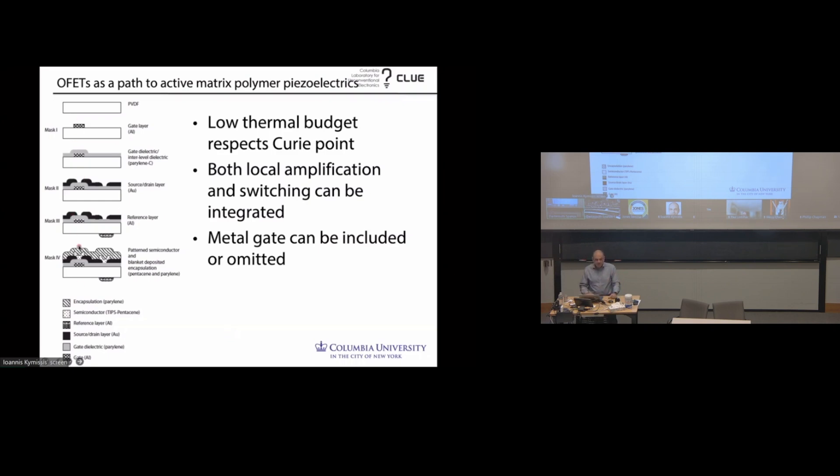So the solution that we've been working on for some time is to put active electronics directly onto the PVDF. The first thing I mentioned before is that the thermal budget that we have is quite limited. So we need to use transistors which we can process at low temperatures. Organic field effect transistors meet that requirement. So that low thermal budget respects the Curie point. The second part is, we can talk about this more in the Q&A if people have questions, but we can make two different kinds of transistors. The transistor on the left is kind of a boring, normal, thin film transistor. And it might look upside down, because it is, but there's a gate. There's a gate dielectric, the source and drain, the semiconductor. There, you change the gate, the channel changes, and you can do your normal transistor amplification or switching.